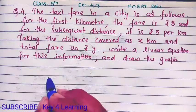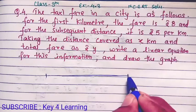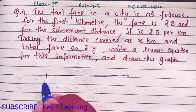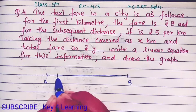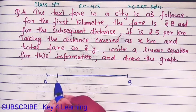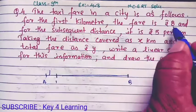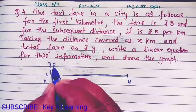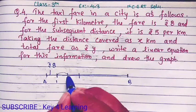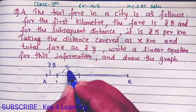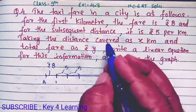तो सबसे पहले हमने मान लिया कि यहाँ से यहाँ तक का एक distance है जो travel किया जाता है। Suppose point A और point B है। पहले 1 kilometer — यहाँ से यहाँ तक एक kilometer — इस 1 kilometer की distance तय करते हैं तो हमें 8 रुपए पे करने पड़ते हैं। आगे बढ़ने पर हर kilometer के अनुसार हमें 5 रुपए per kilometer पे करना पड़ेगा।